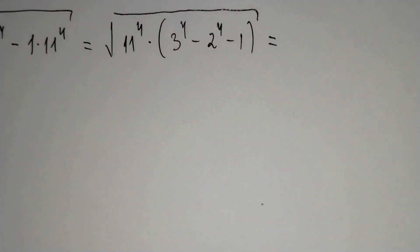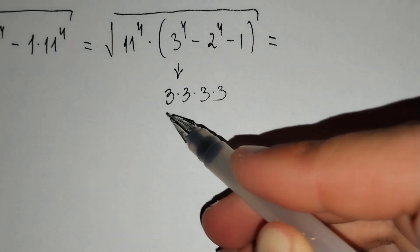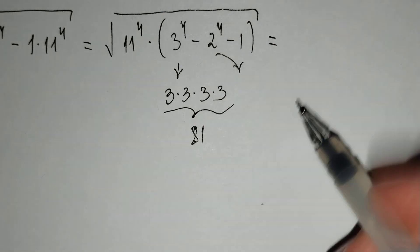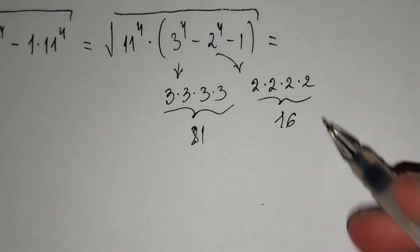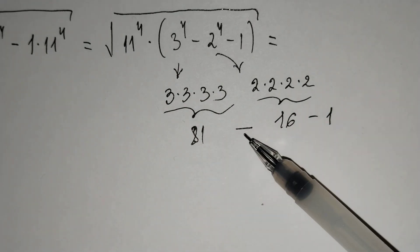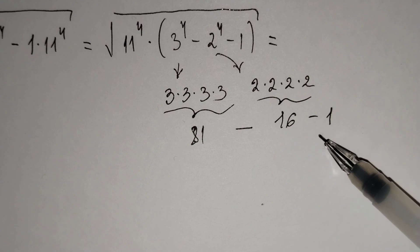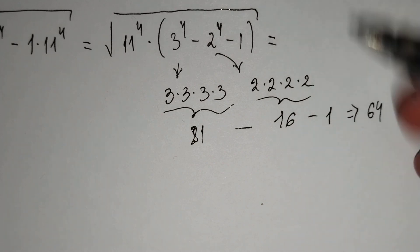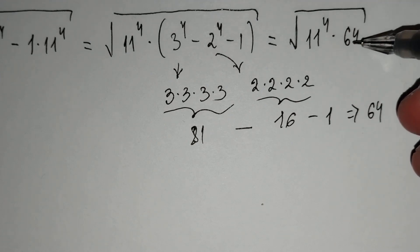Now, 3 to the power 4 equals 3 times 3 times 3 times 3, which equals 81. And 2 to the power 4 equals 2 times 2 times 2 times 2, which equals 16, minus 1. So we have 81 minus 16 minus 1, which equals 64.